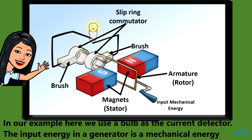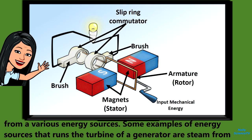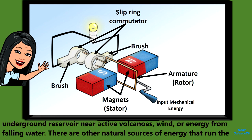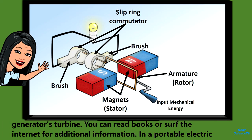The input energy in a generator is mechanical energy from various energy sources. Some examples of energy sources that run the turbine of a generator are steam from underground reservoirs near active volcanoes, wind, or energy from falling water. There are other natural sources of energy that run the generator's turbine. You can read books or surf the internet for additional information.